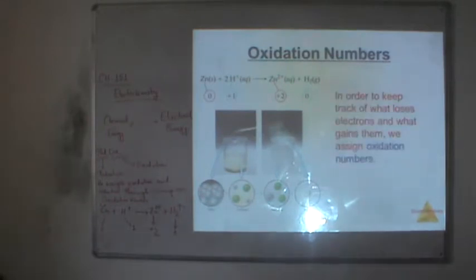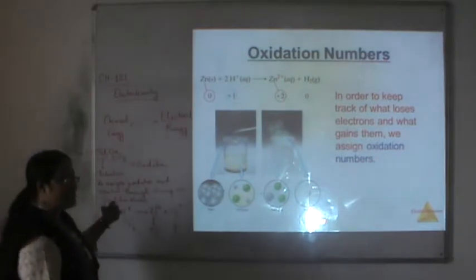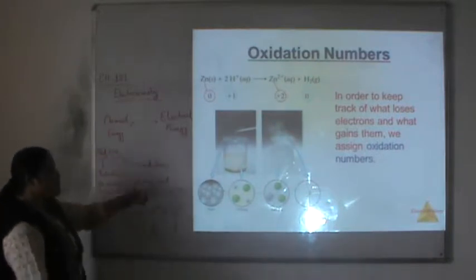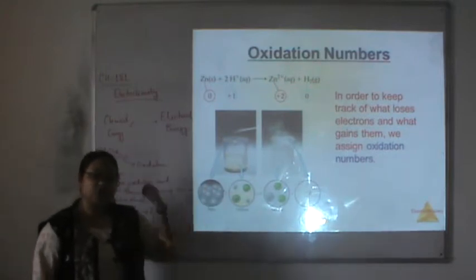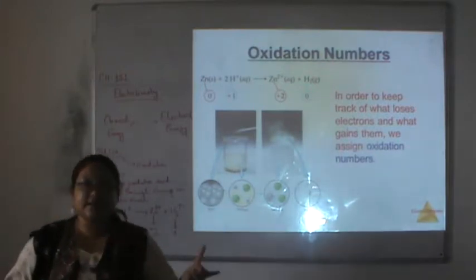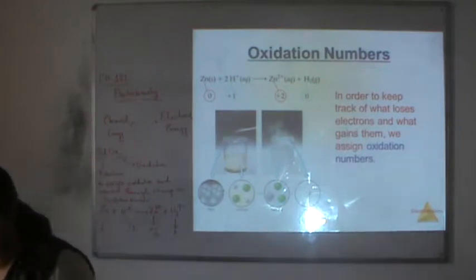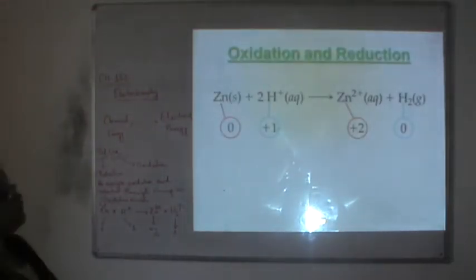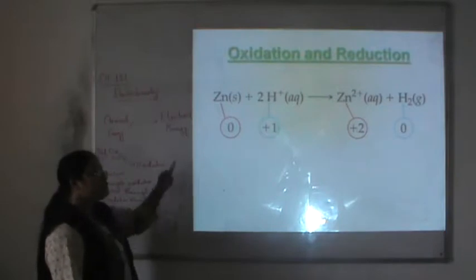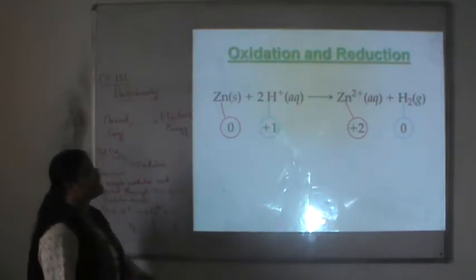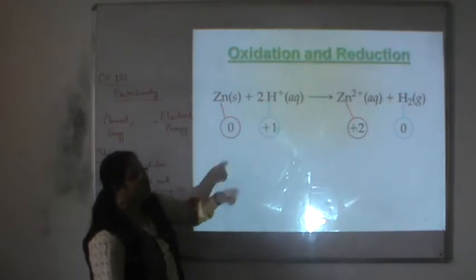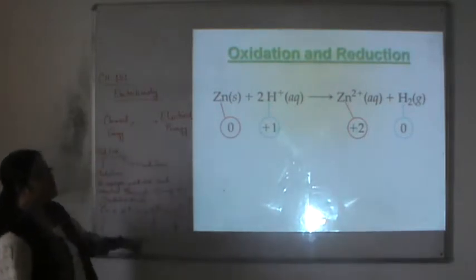In order to keep track of what loses electrons and what gains electrons, we assign oxidation numbers. For this particular reaction, when zinc solid reacts with H+ to form zinc 2+ and hydrogen gas, the oxidation number of zinc changes from zero to plus two. This change from zero to plus two is oxidation.